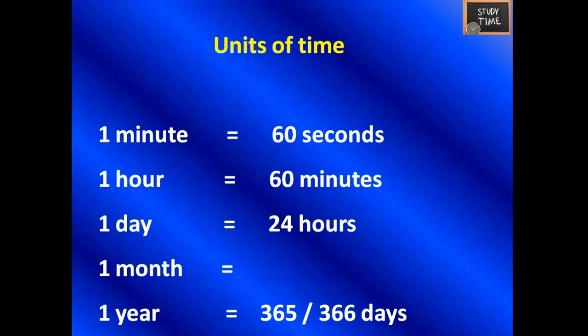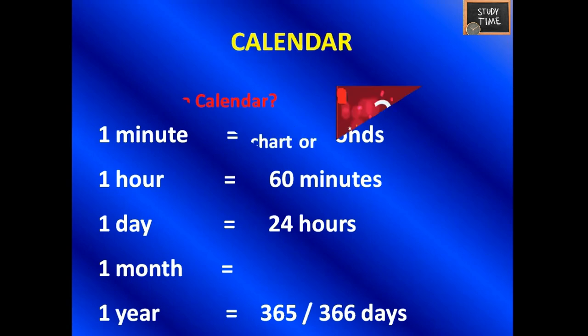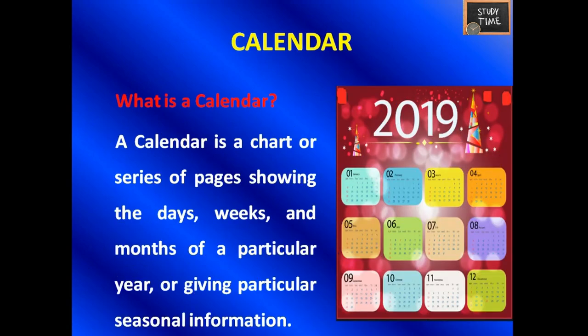What are the units of time? One minute equals 60 seconds. One hour equals 60 minutes. One day equals 24 hours. One month equals 30 or 31 days; in February it can be 28 or 29 days. One year can be 365 or 366 days.